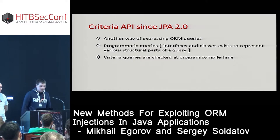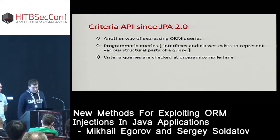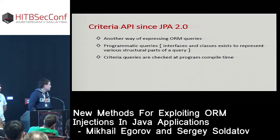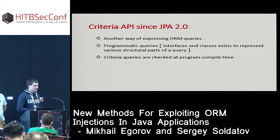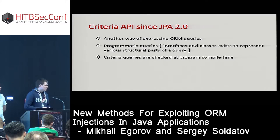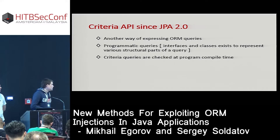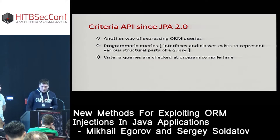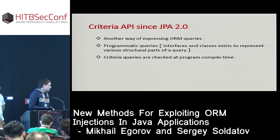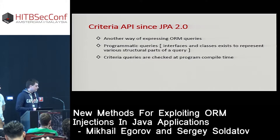Since JPA 2.0, there is also the Criteria API — a set of interfaces and classes to construct queries programmatically. In your Java application you have two alternatives: you can use string-based JPQL queries, or you can construct queries programmatically via the Criteria API. Criteria queries are checked at compile time, so the code becomes safer because it's harder for a developer to introduce a security bug.